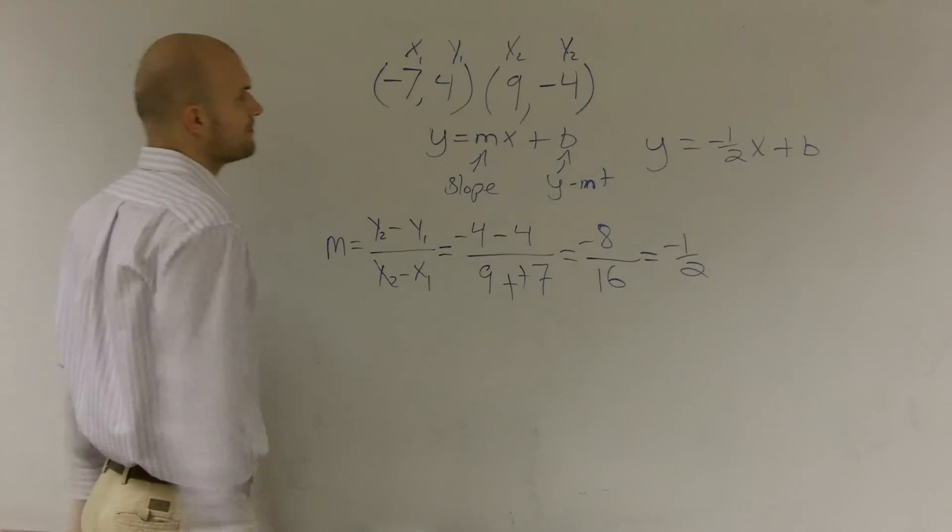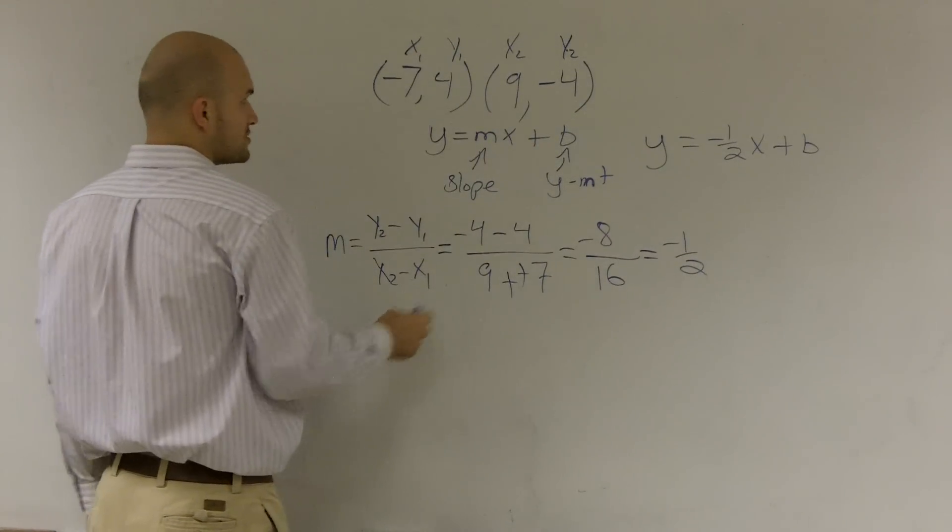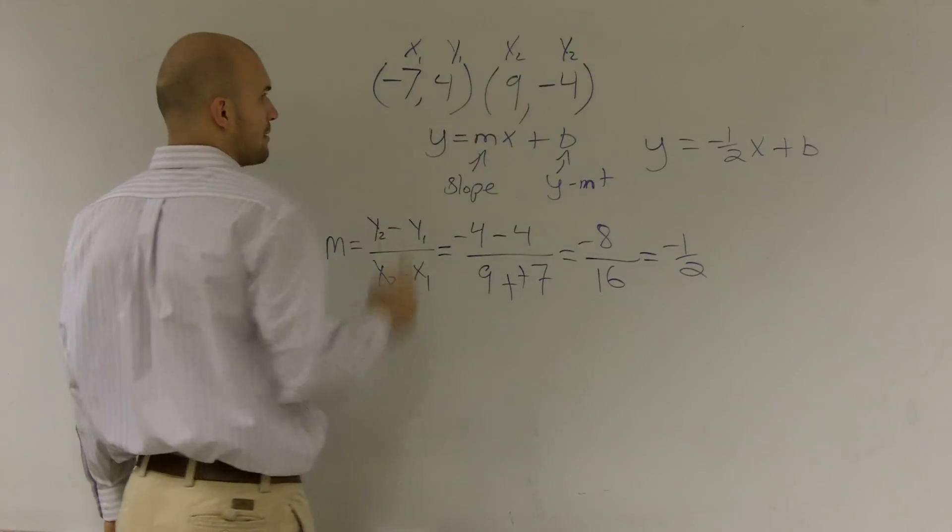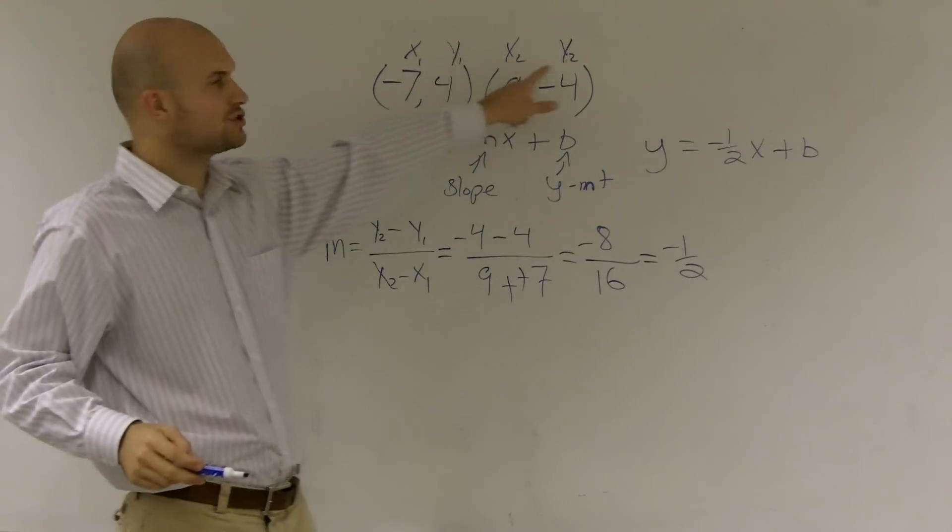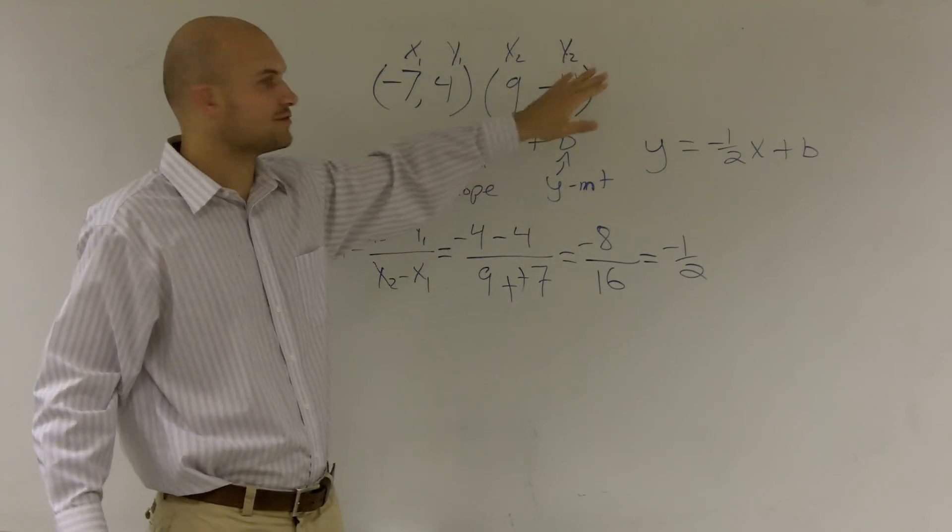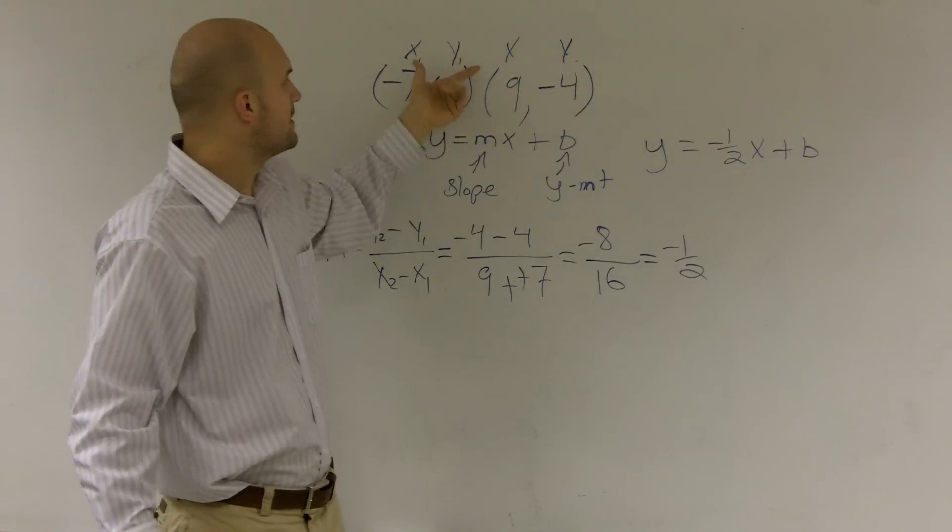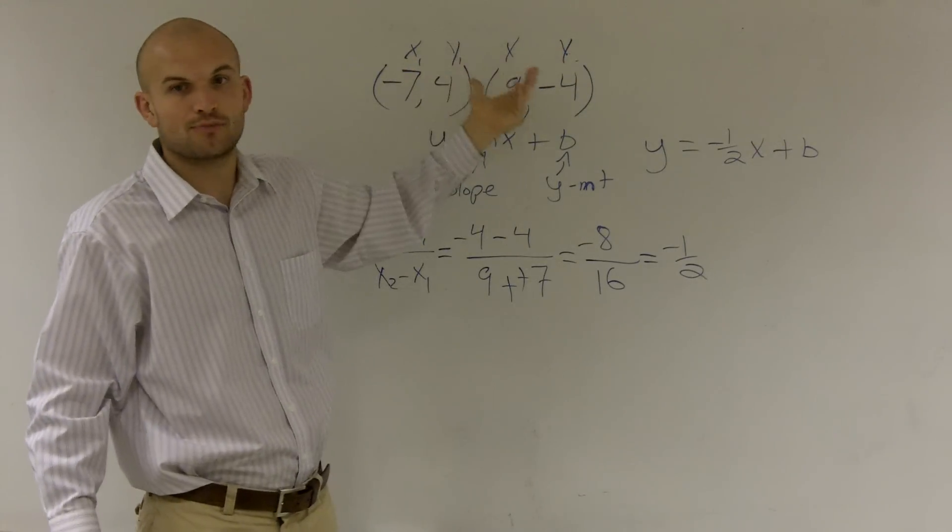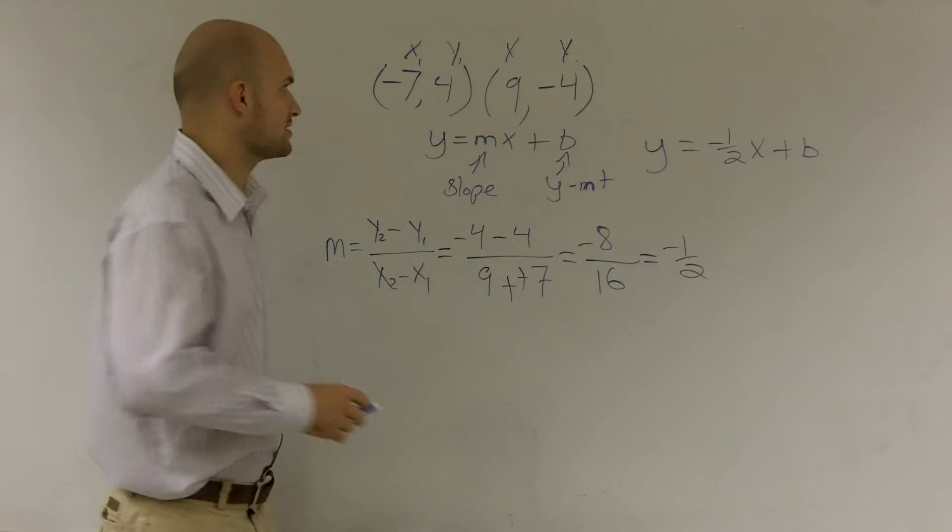So let's do that. Let's pick a point. I'll pick my second point. So remember, that's my x-coordinate, and that's my y-coordinate. Now, I know I have little twos up here, but we can just erase those twos, because all those were used for was to distinguish them between our two points. But I'll go ahead and plug them in.